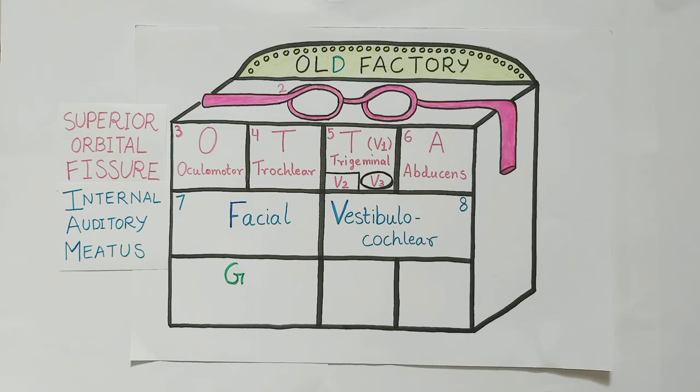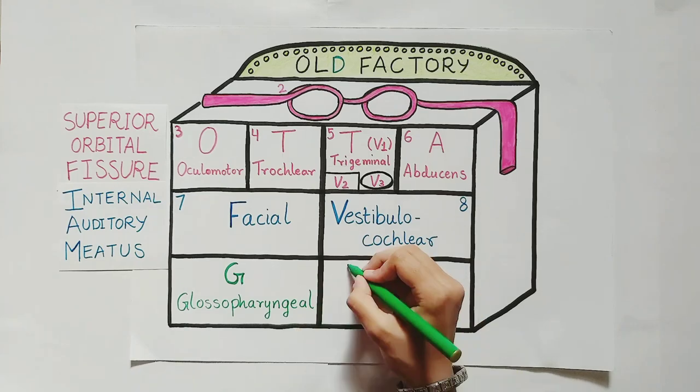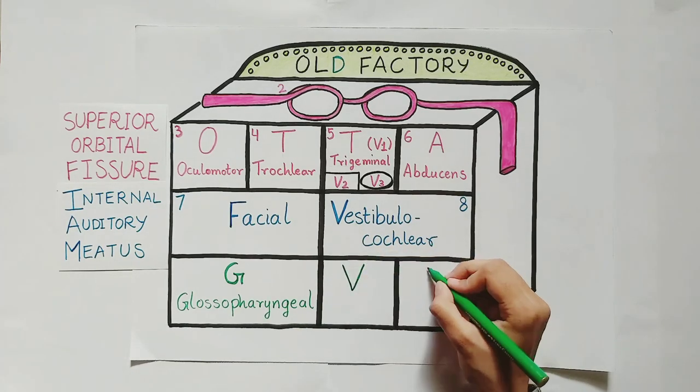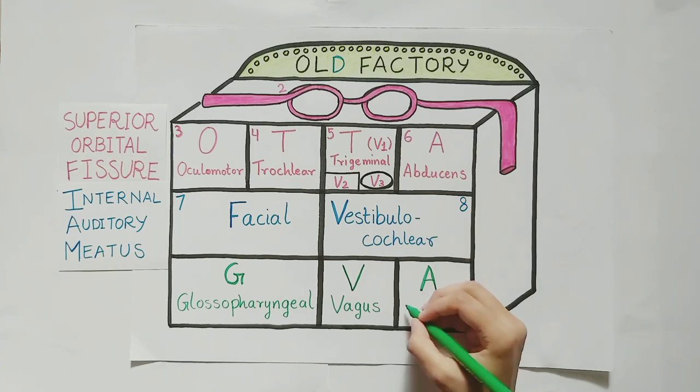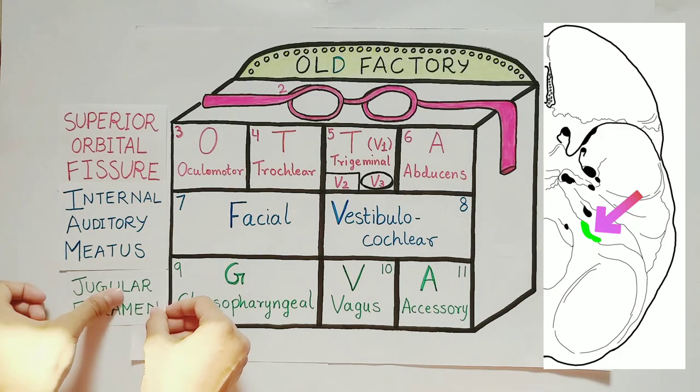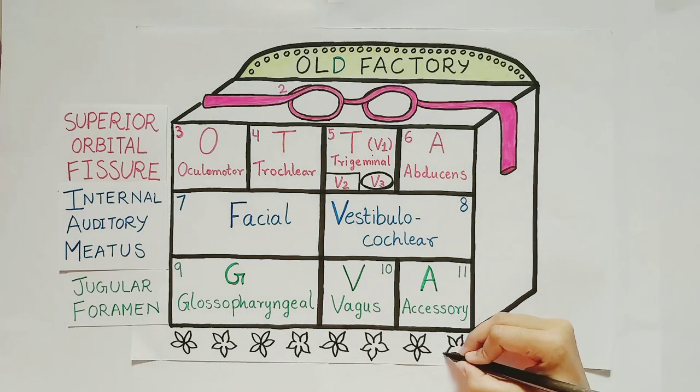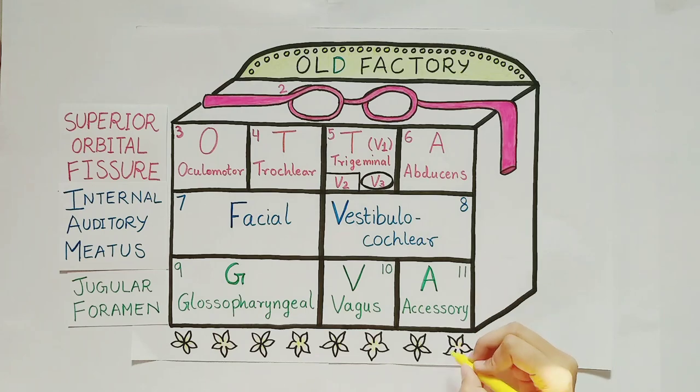Moving on to the ground floor. For G, we have glossopharyngeal nerve. And let's keep the V's and the A's in the same row. V for vagus nerve and A for accessory nerve. And these three nerves pass through the jugular foramen. So to remember this, I drew some jasmine flowers, which also starts with a J and F. Obviously,